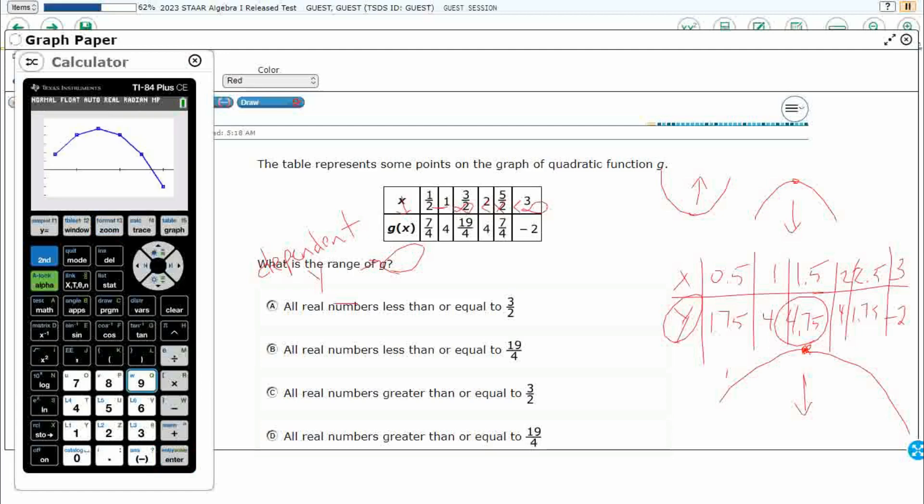Then what we're going to do is we're going to hit zoom and we're going to hit number nine. We're going to get that zoom stat and that is going to get us what we basically drew and if I want to trace this, we can see that we did pretty good. It looks like our max is going to be that 4.75.